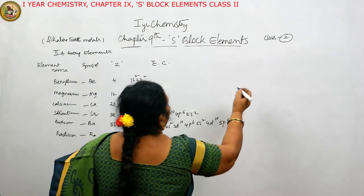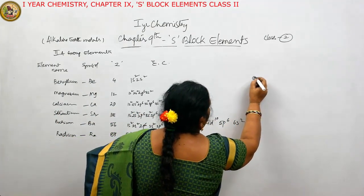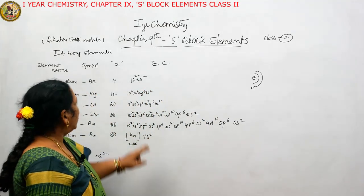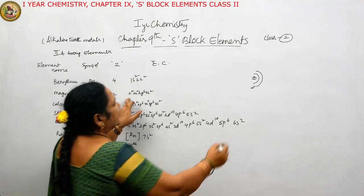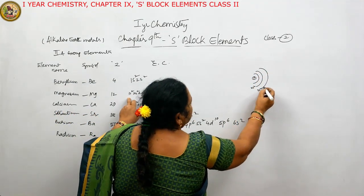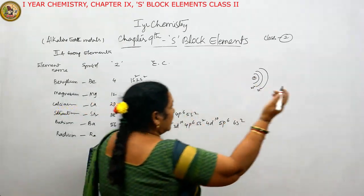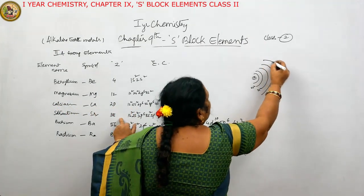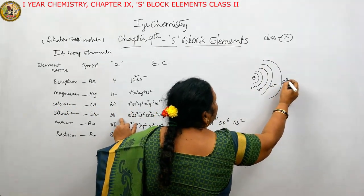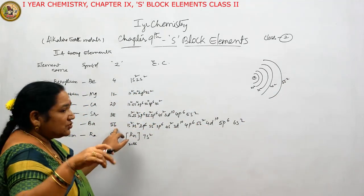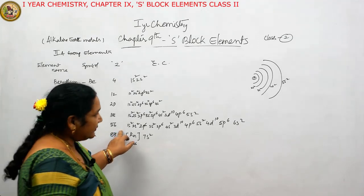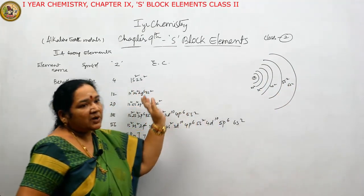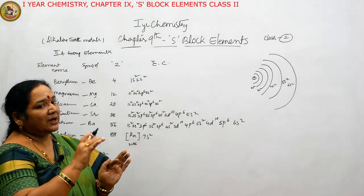For example, in beryllium — suppose this is the nucleus — we have 1s² and 2s². Coming to magnesium, one extra shell is added: 3s² electrons are there. Coming to calcium, one more shell is added: 4s² electrons. Coming to strontium, one more shell is added: 2 electrons in the 5s orbit. And the next element barium has one more shell added: 6s². As we move from top to bottom, there is an increase by one orbit, and the atomic size gradually increases.